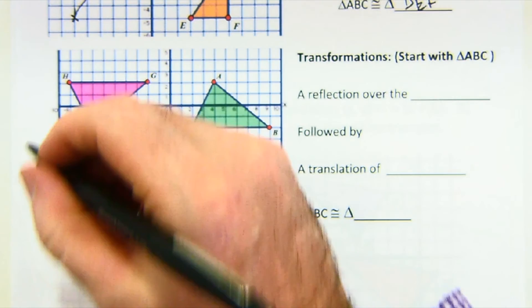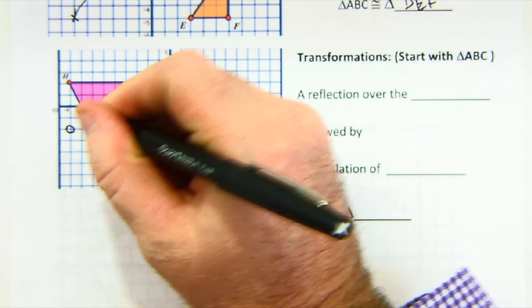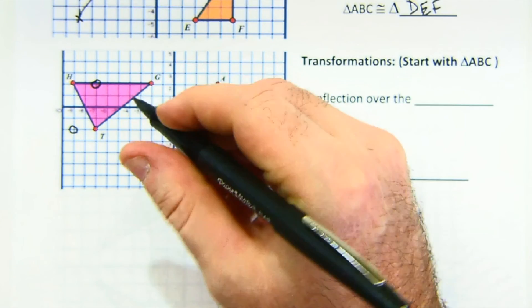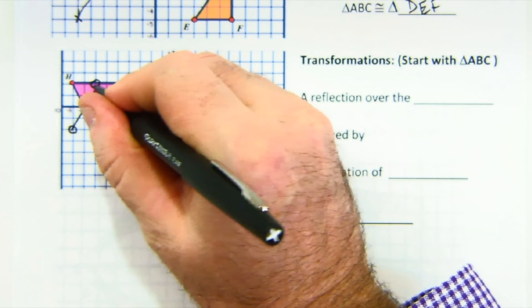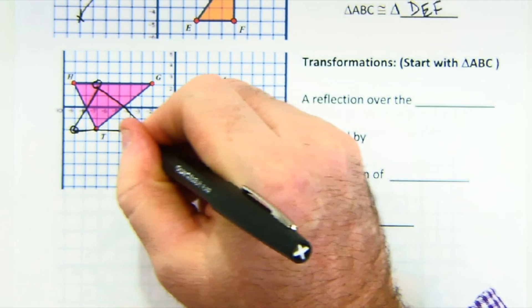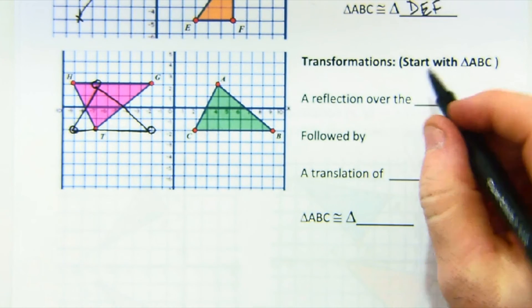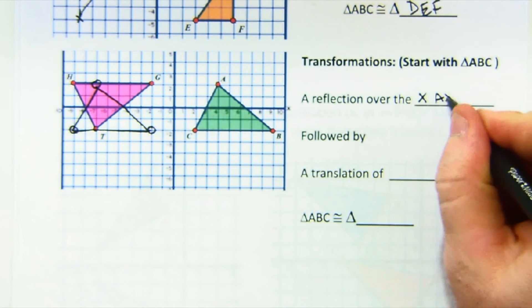I definitely think I see a reflection as necessary. And actually now that I look at it, I actually like the reflection over the x-axis first. That would place my three points here. If I reflect, let's see what they told me to do. Oh yeah, I'm okay. So I'm going to reflect over the x-axis this time.